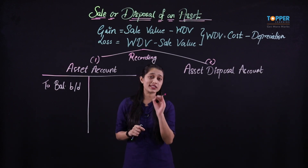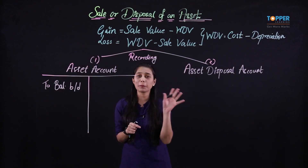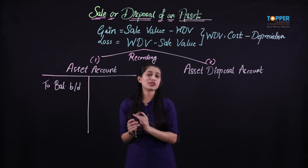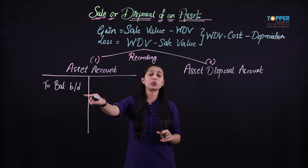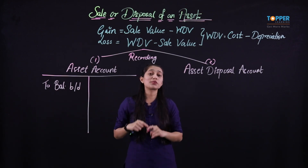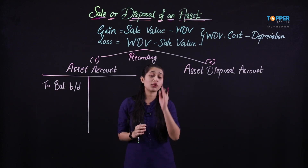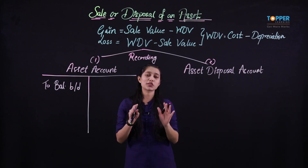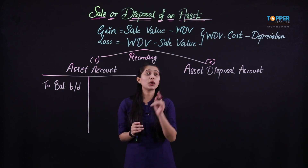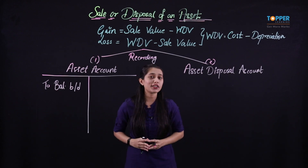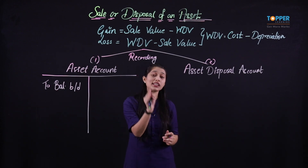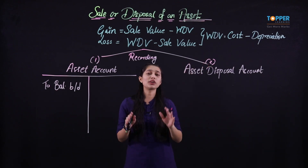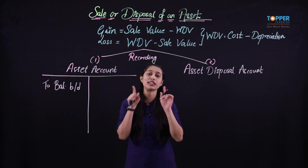We need to keep practicing questions based on sale of asset during or in the middle of the year. Let us consider such an example so that we clearly know the accounting treatment. If the asset was sold somewhere in the middle of the year, since we are at the start of an accounting year, firstly we will have to identify the depreciation on the asset that has been sold till the date of sale, so that we can correctly calculate the WDV — which is necessary to identify the gain or loss. The sale value will be given in the question; along with that, what we also need is the WDV.